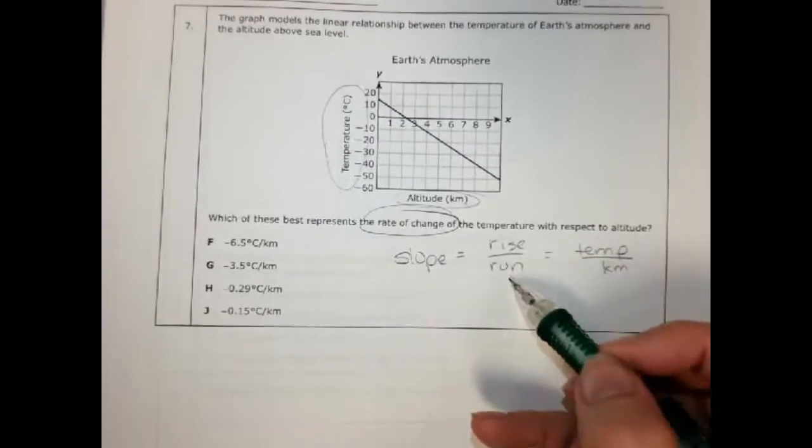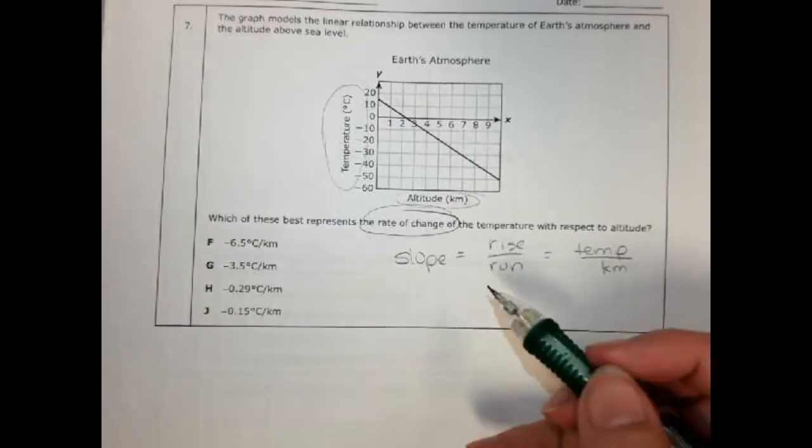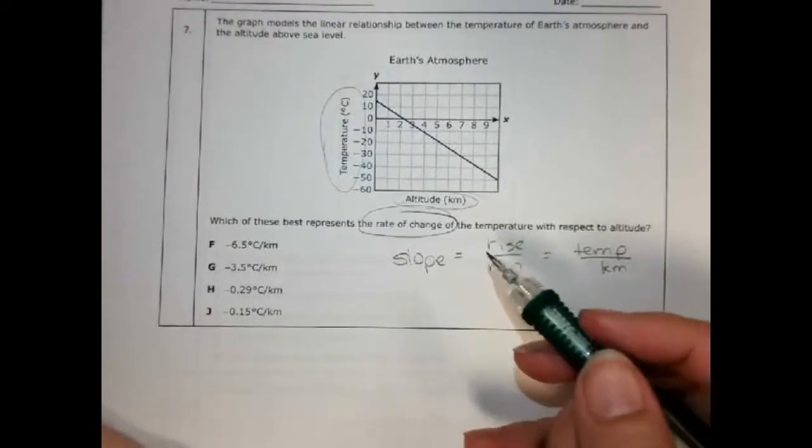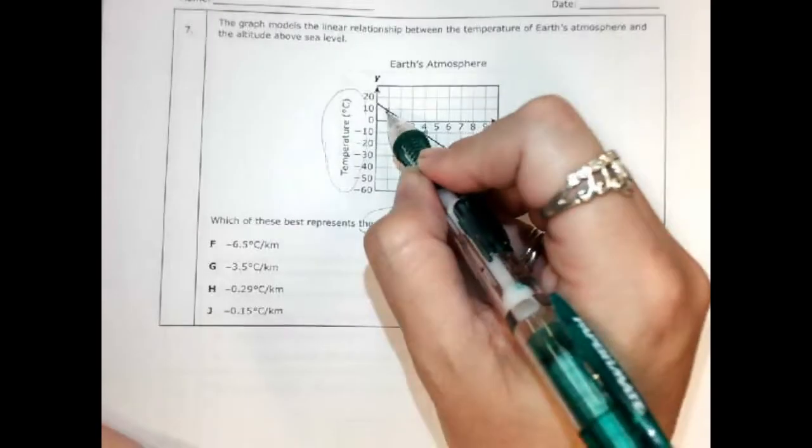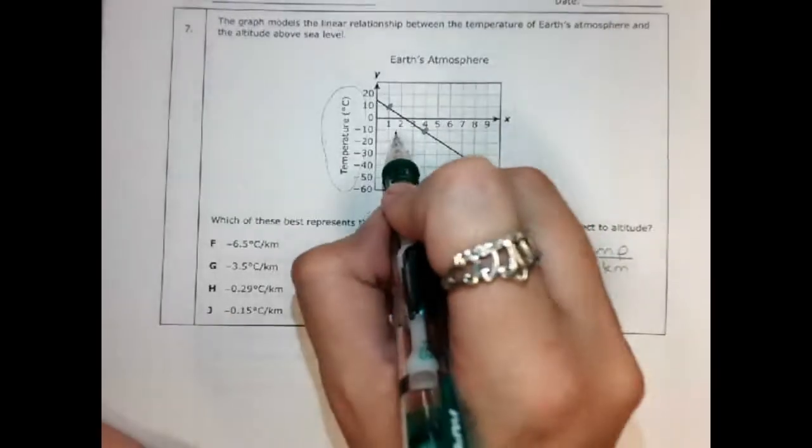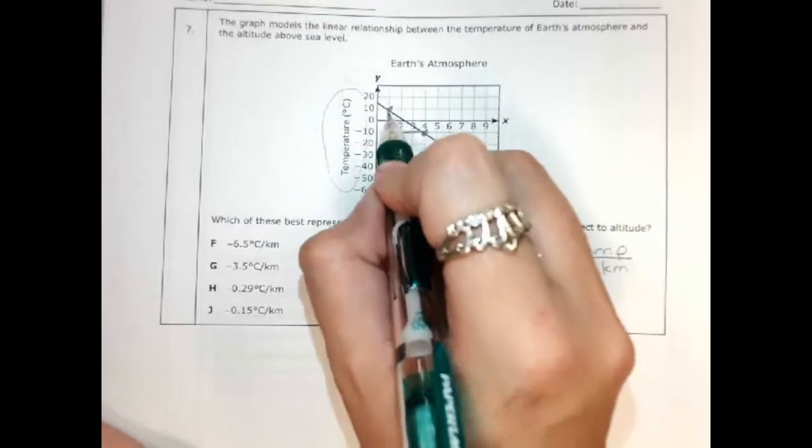And rise over run, I just need to find a couple of places here on my chart where I can calculate my rise over run. So let's see, this point right here and this point right there look pretty close to the corners.